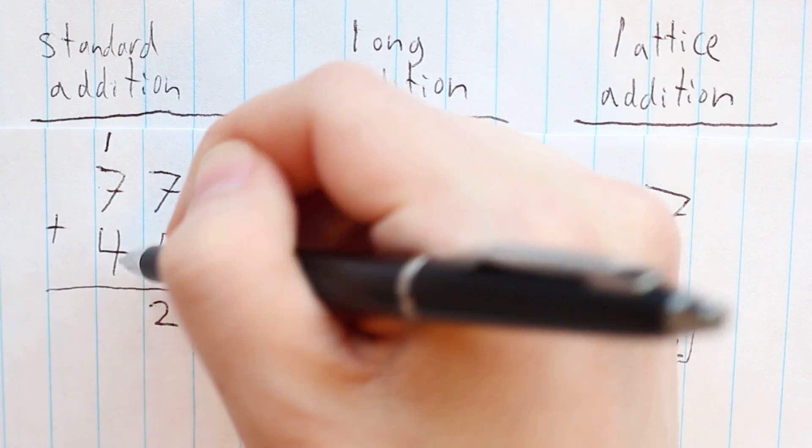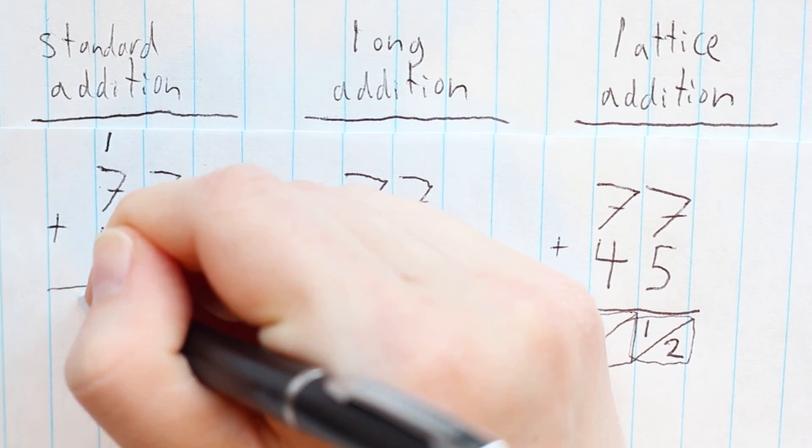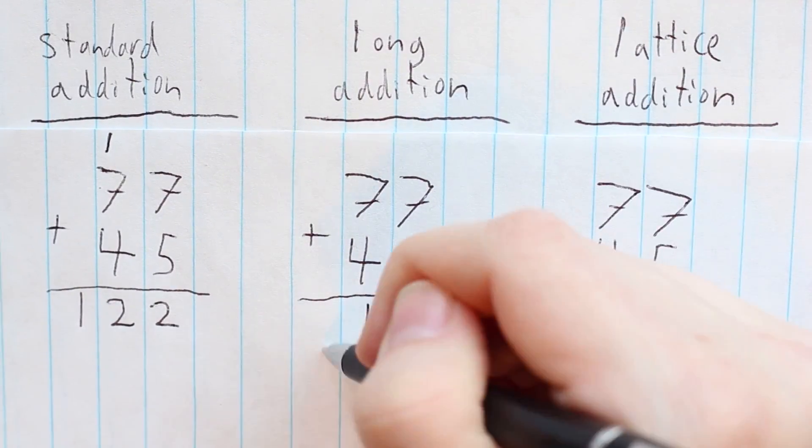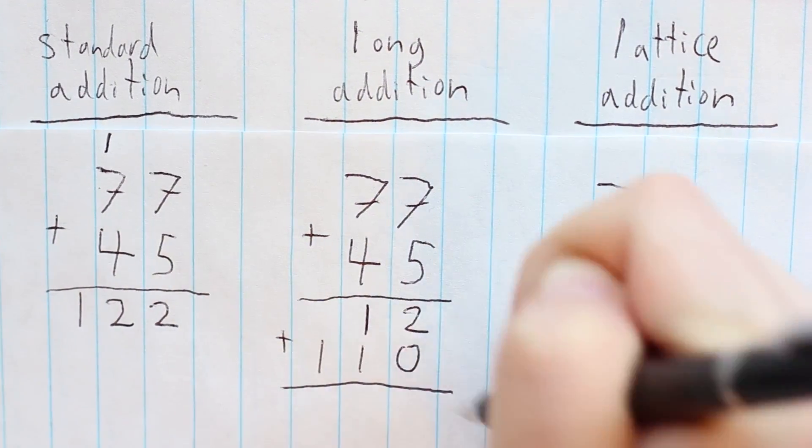In the standard algorithm, you add 1 plus 7 plus 4 to get 12. In long addition, you add 70 plus 40 to get 110, and then add 12 to that.